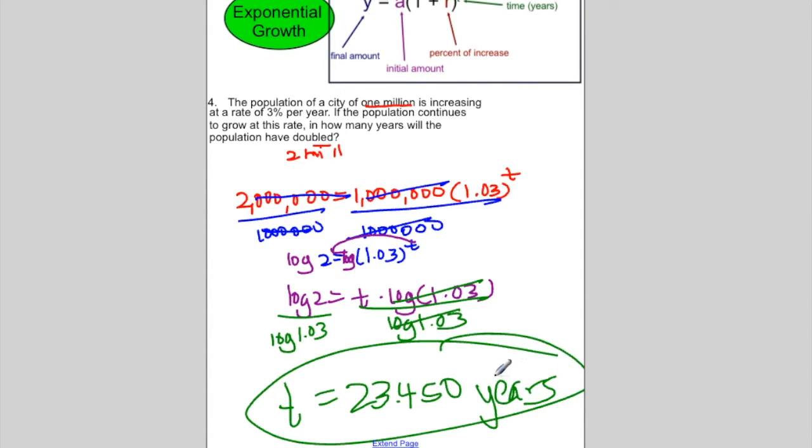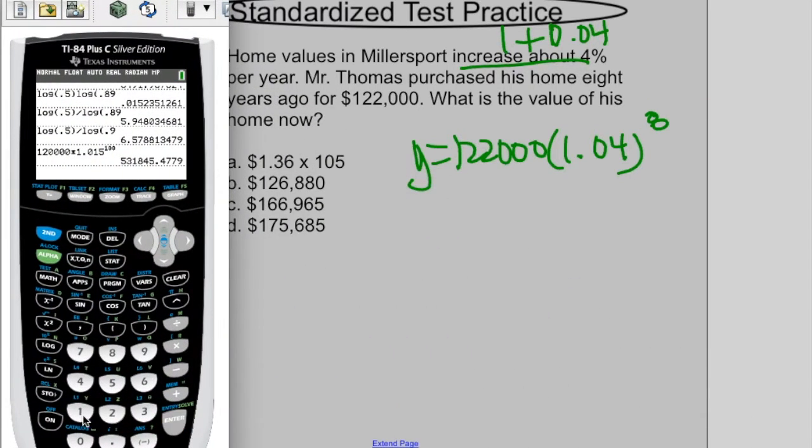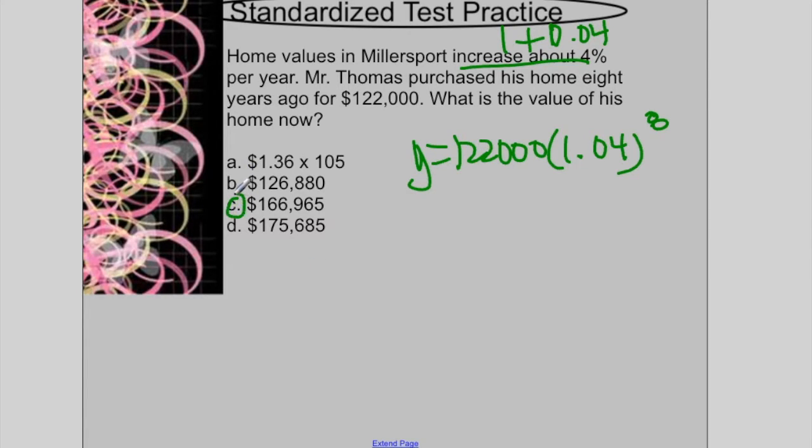That is example 4. Let's do example 5. Homes in Miller Sport increased about 4% per year. Mr. Thomas purchased his home 8 years ago for $122,000. What is the value of his home now? So y equals, I started with $122,000. It's increasing, so 1 plus 0.04 gives me 1.04, and 8 years. If we type it in, $122,000 times 1.04 to the 8th will give you 166. And they rounded a little differently, so what's the best answer? The best answer will be C.